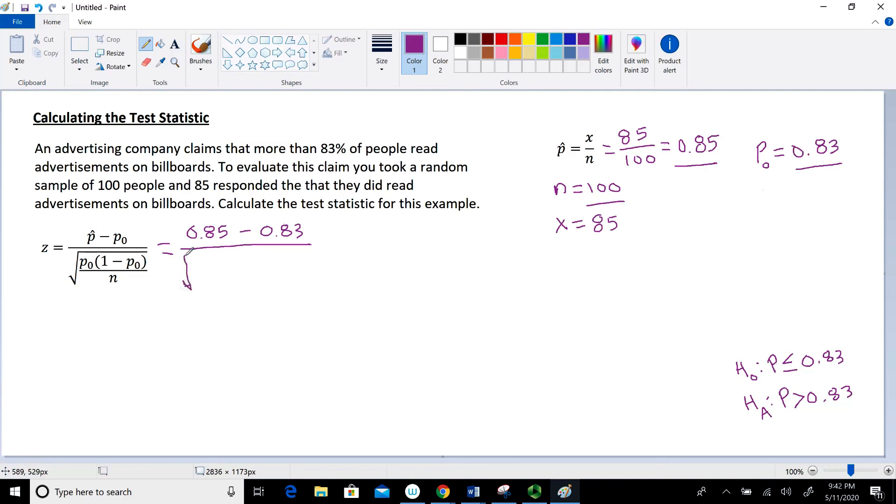So in the denominator, we have the square root of P sub 0 times 1 minus P sub 0, all divided by our sample size. So P sub 0 is 0.83. And that's going to be times 1 minus 0.83, all divided by 100. Now I'm expecting that you can use your calculator to calculate this out. But I always highly recommend doing the numerator for the subtraction and then doing the denominator, taking the square root of that kind of messy looking thing down there separately, because otherwise what happens is we end up typing this in the way that we see it, and we only divide this 0.83 by that square root of P sub 0 times 1 minus P sub 0 over the square root of N.